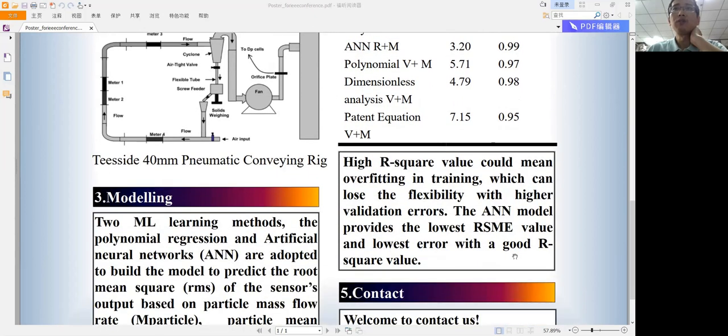High R-square value could mean overfitting in training, which can lead to low flexibility with high validation errors. The ANN model provides the lowest RMSE value and lowest error with a good R-square value.